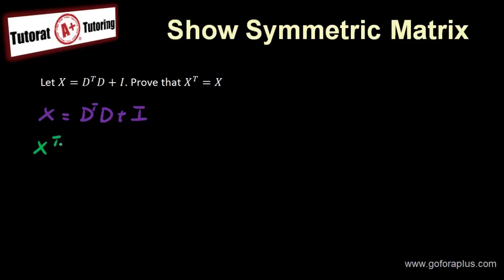So I know that xt equals to dtd plus i, all this transpose.